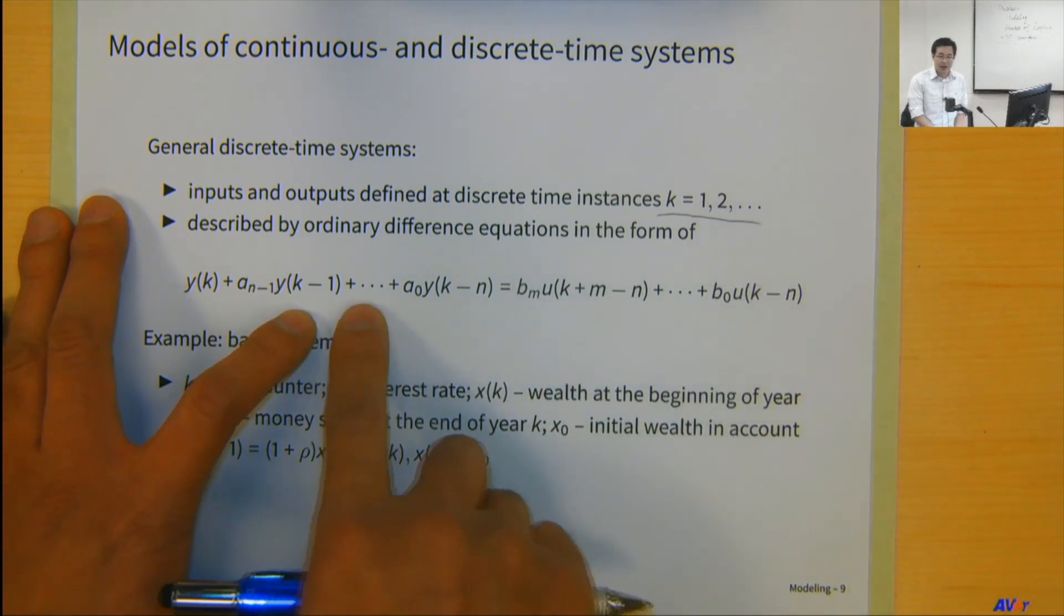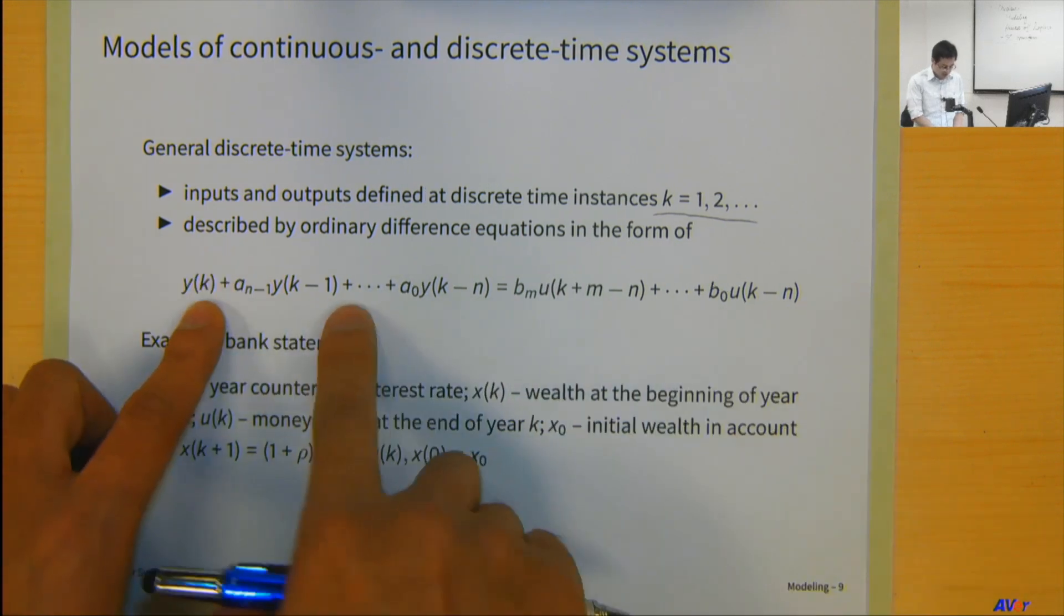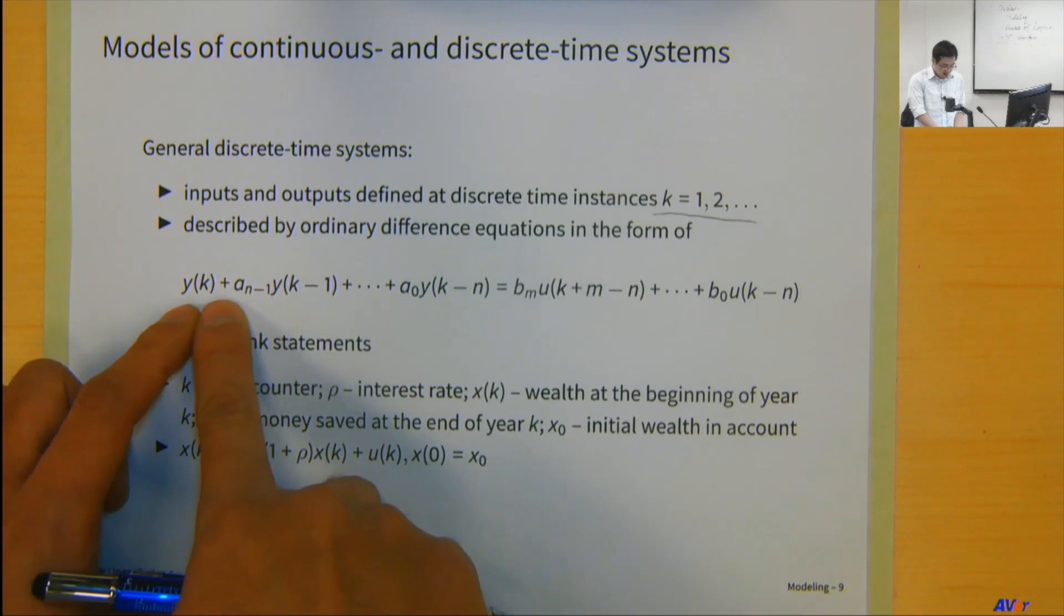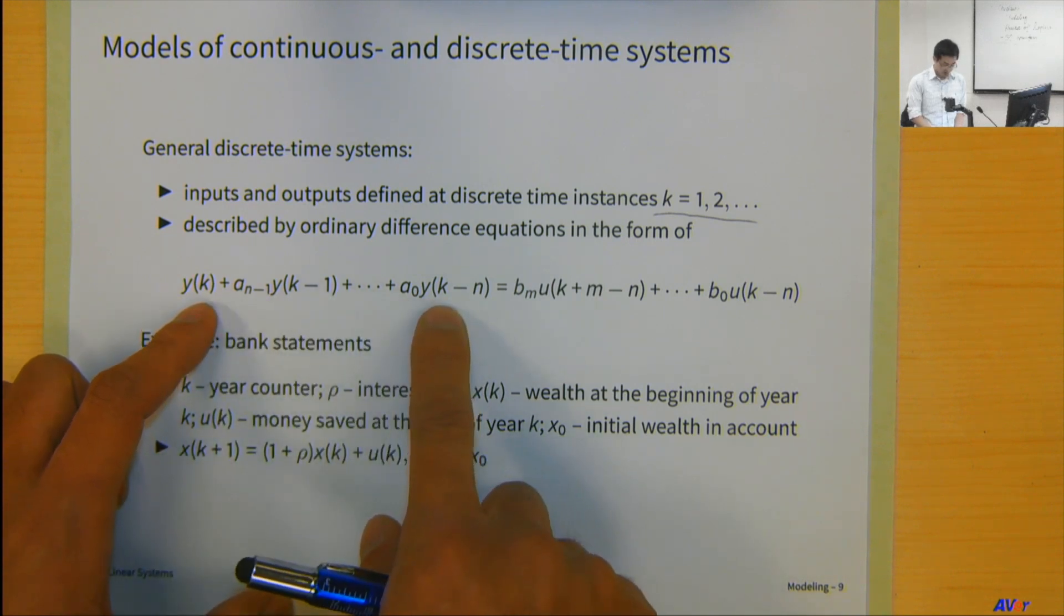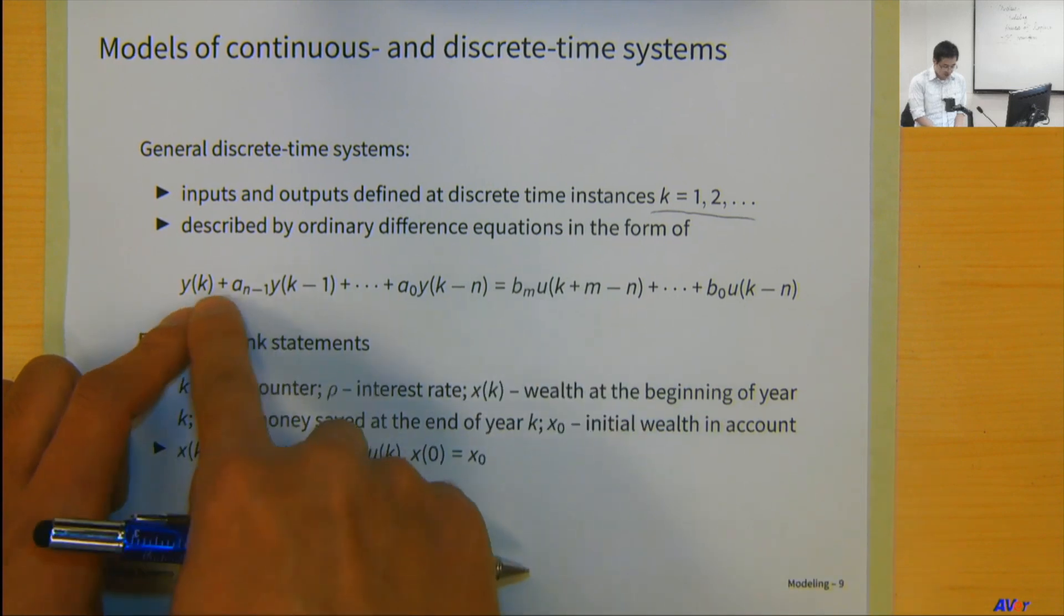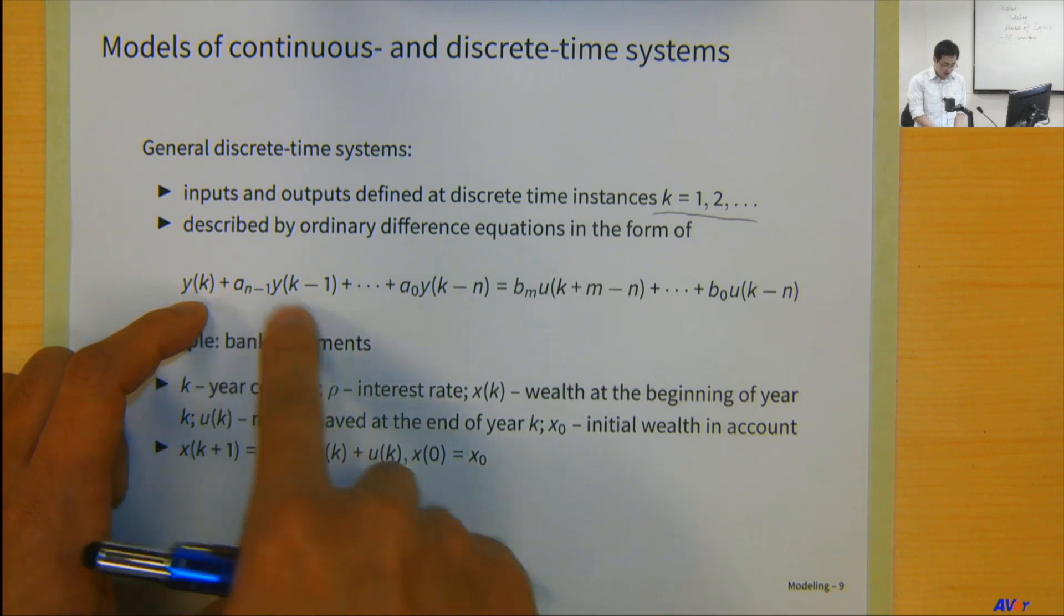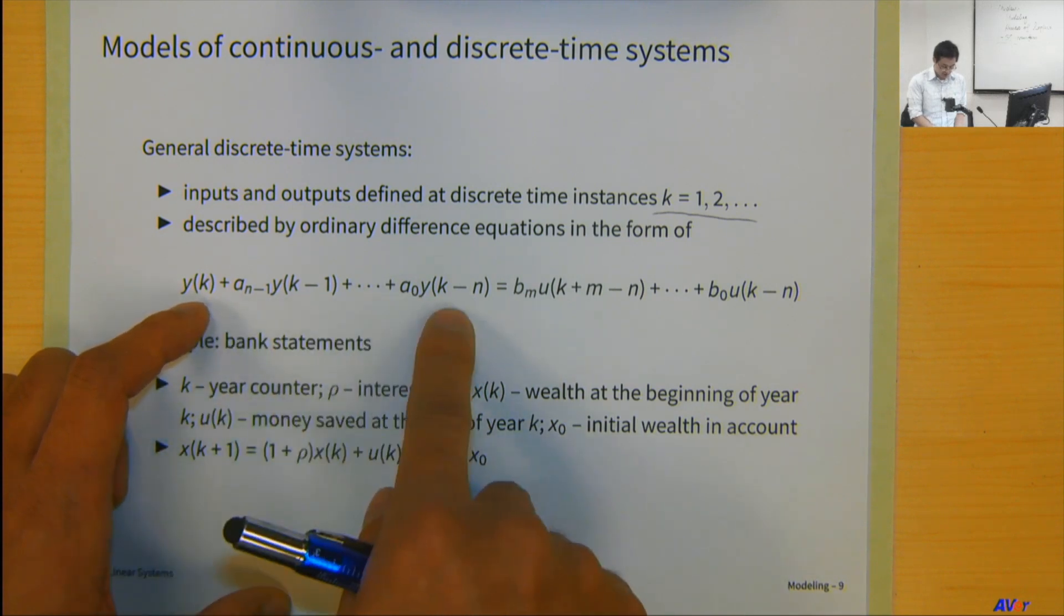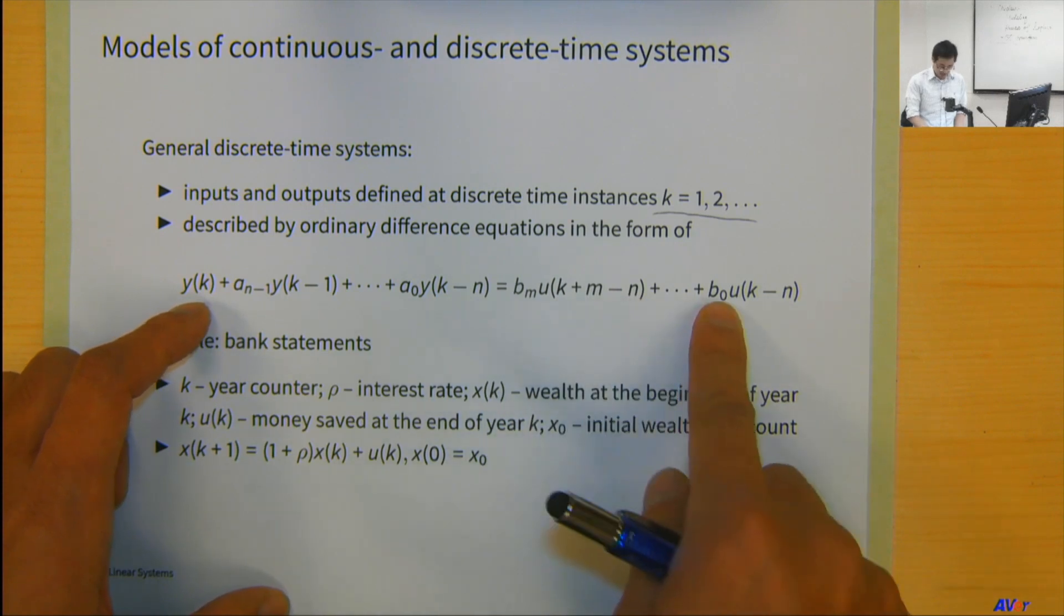But instead, this is still a dynamic system. I'm still using information in the past. You see, here, the same here. This system, obviously, y(k), looking at this, y(k) depends on the previous output. If you shift these terms all to the right, you will see y(k) depends on y(k-1), y(k-n), etc. This is still a dynamic system. It depends on the past of the output. It also depends on the input, discrete as well.